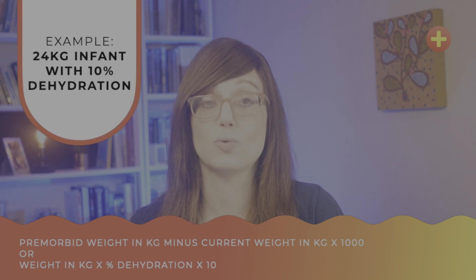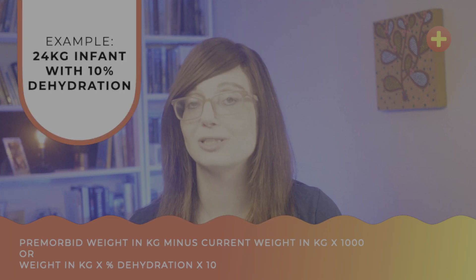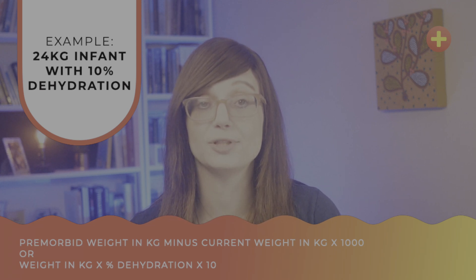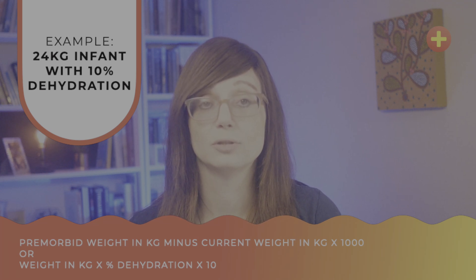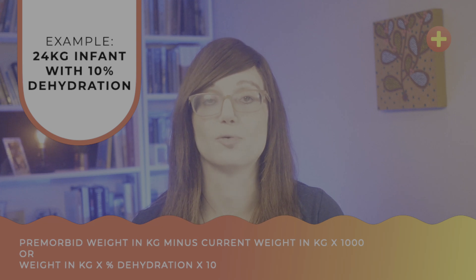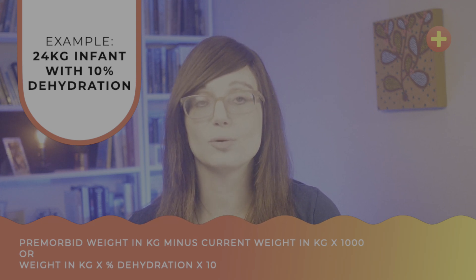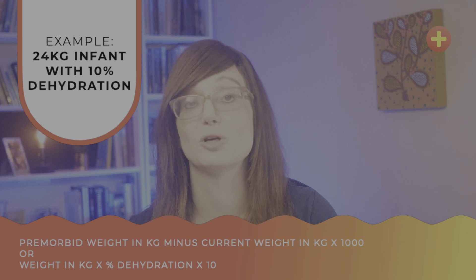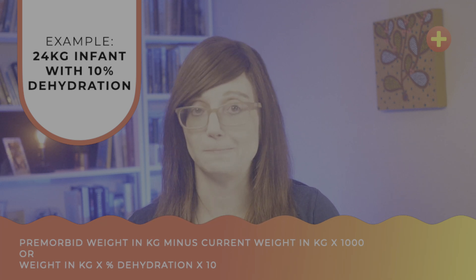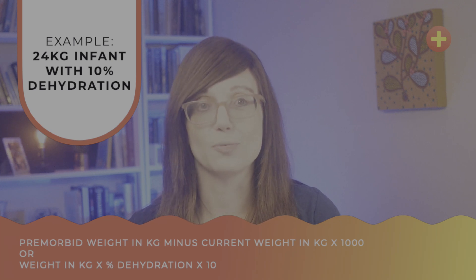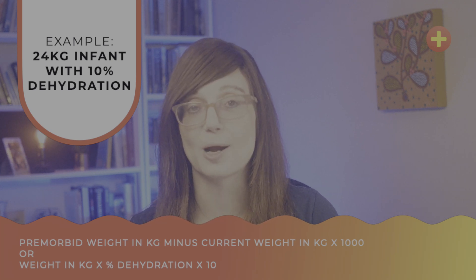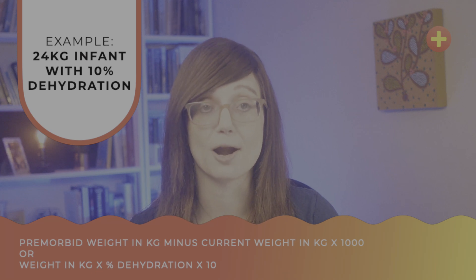In our 24 kg child example, if we say the child has 10% dehydration, you calculate the fluid deficit as 24 × 10 × 10, giving a fluid deficit of 2,400 mls. This deficit is replaced over 24 or 48 hours. To replace 2.4 litres over 24 hours, you give 100 mls per hour. Remember that's just the deficit — you also have to give maintenance fluids. So deficit of 100 mls per hour plus maintenance of 66 mls per hour gives 166 mls per hour total.